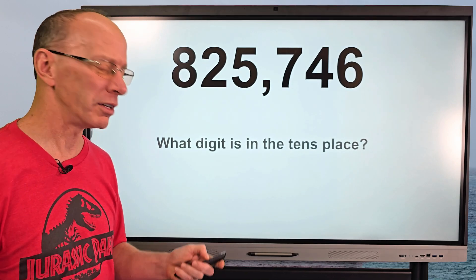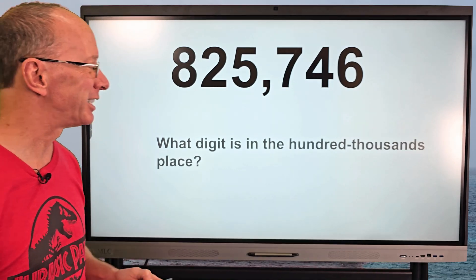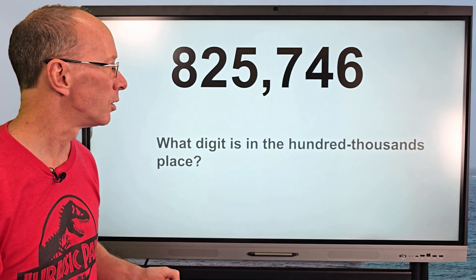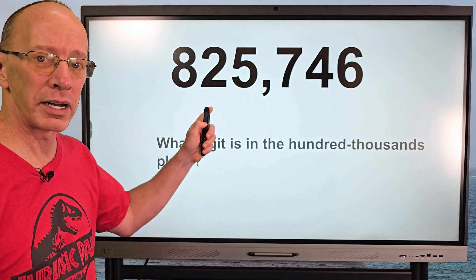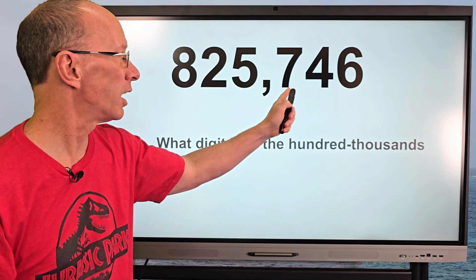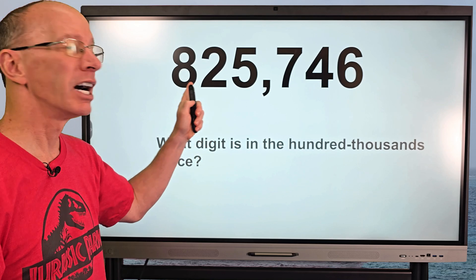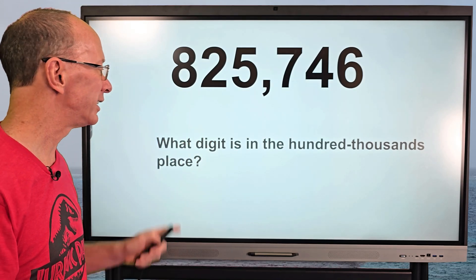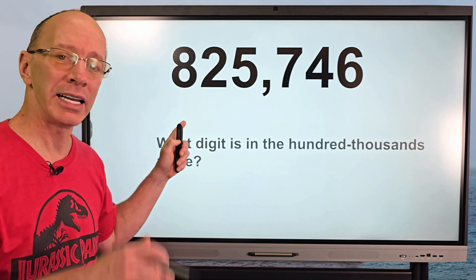Muy bien, you're doing fantastic. What digit is in the hundred thousands place? That's way over here somewhere. Here's our ones, tens, hundreds, thousands, ten thousands, hundred thousands. So the digit in the hundred thousands place would be eight.